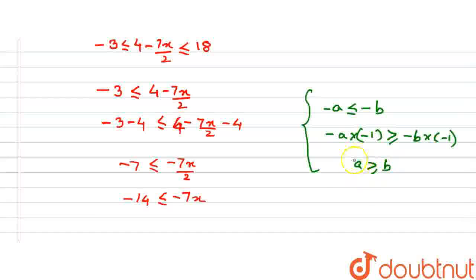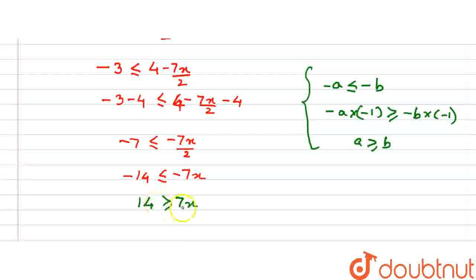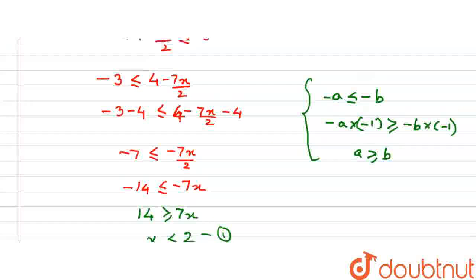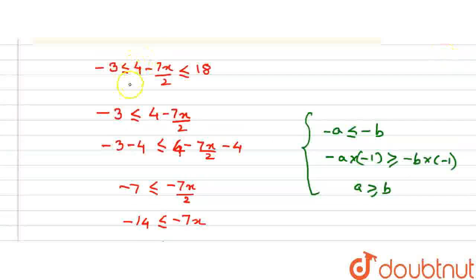Using this rule, let us multiply both sides of the inequality by minus 1. We will get 14 greater than or equal to 7x. Now we further reduce this by dividing by 7, and this equation reduces to x less than or equal to 2. This is my first inequality result.